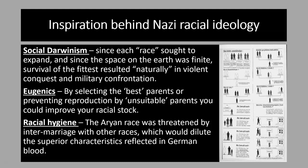The next pseudoscience where Hitler got his ideas from is eugenics, which was actually quite popular in a number of countries, even in the USA and Britain. This was the idea that by selecting the so-called best parents, or preventing reproduction by unsuitable parents, you could improve your racial stock — like you might improve plants or animals through selective breeding. Then you have racial hygiene, which takes eugenics a step further: the belief that the Aryan race was threatened by intermarriage with other races, which would dilute the perceived superior characteristics in German blood.